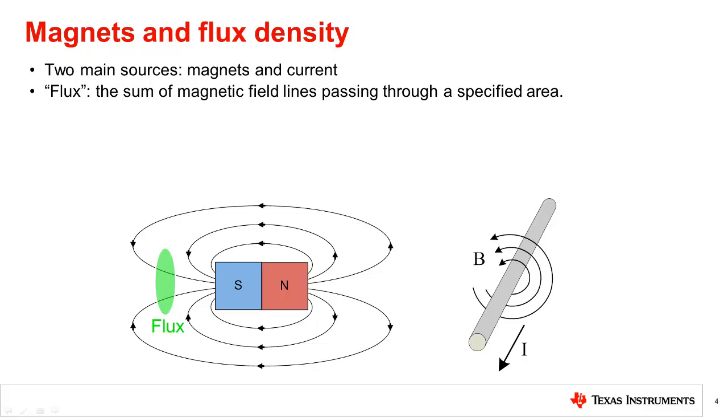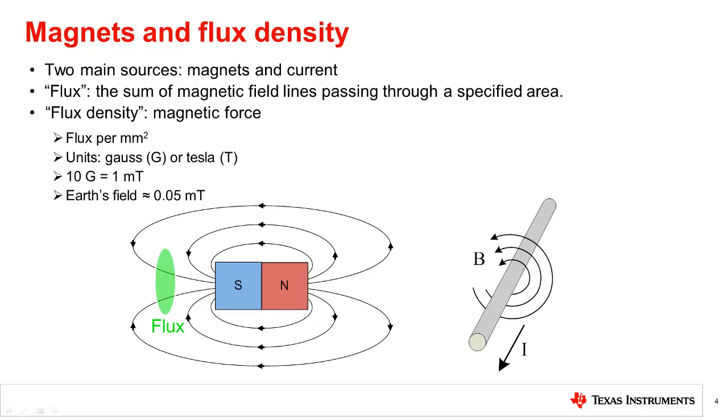As far as Hall sensors are concerned, the sum of total lines isn't important, but rather the flux density. Magnetic flux density is the amount of flux per area. The unit for flux density is Gauss or Tesla. Tesla is the official SI unit, but Gauss is also very commonly used. We usually talk in terms of millitesla for values involved here, and 10 Gauss is equal to 1 millitesla.